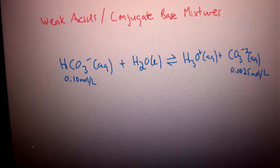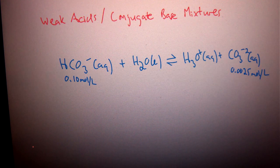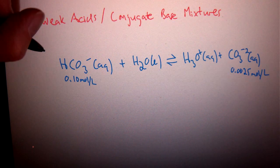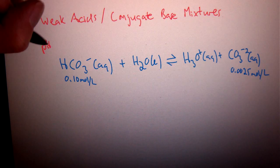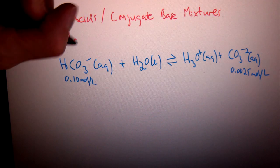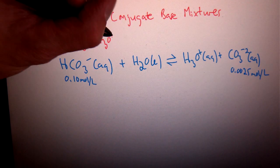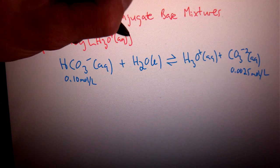So, where that becomes an issue is when we're doing our calculations. In the end I'm trying to find pH. That's my task here. pH equals negative log of hydronium, which means I need to figure out the hydronium at equilibrium.